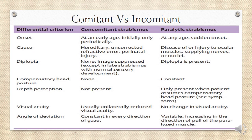Incomitant squint is also called paralytic strabismus. The onset of deviation in incomitant squint is generally seen at a very early age, initially and only periodically. Paralytic squint, however, can occur at any age and is sudden in onset. Concomitant squint is generally gradual in nature — it initially starts with a phoria and later develops into a complete tropia — whereas paralytic squint can manifest at any age and does not have a phoria stage.